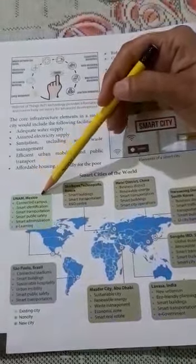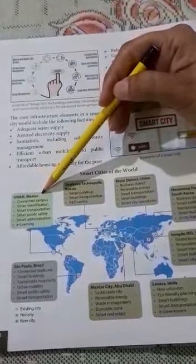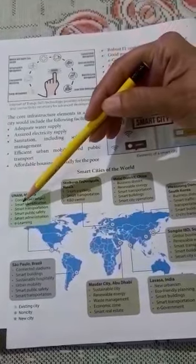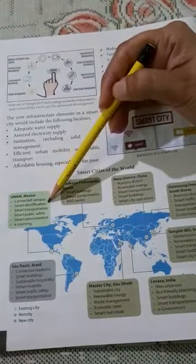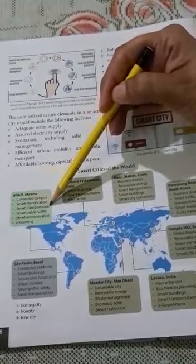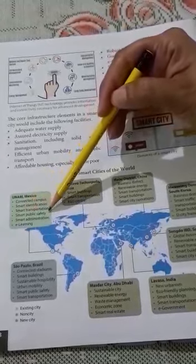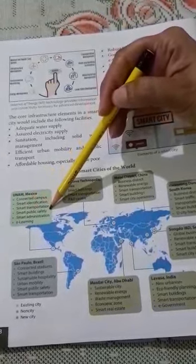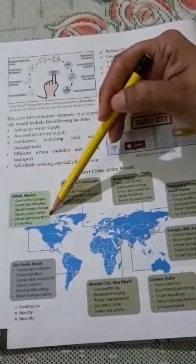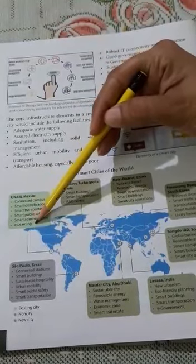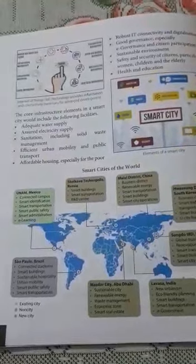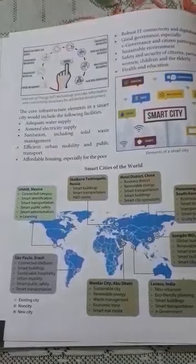The last example is UNAM in Mexico, featuring a connected campus, smart identification, smart transportation, smart public safety, smart administration, and e-learning. With this, I come to the end of this chapter. Thank you.